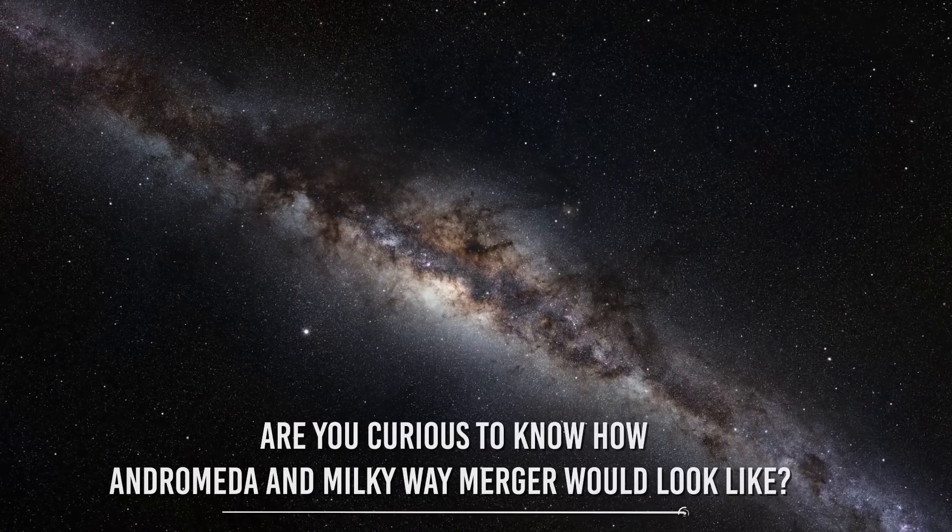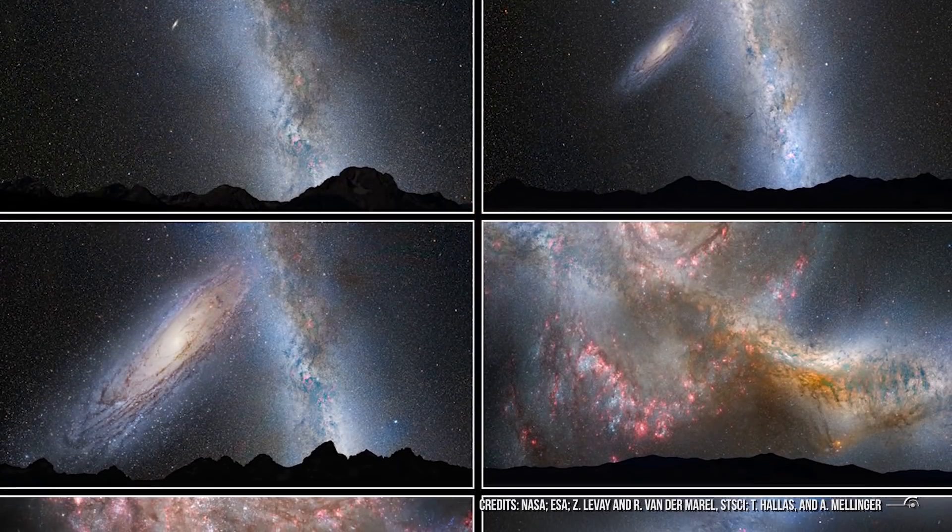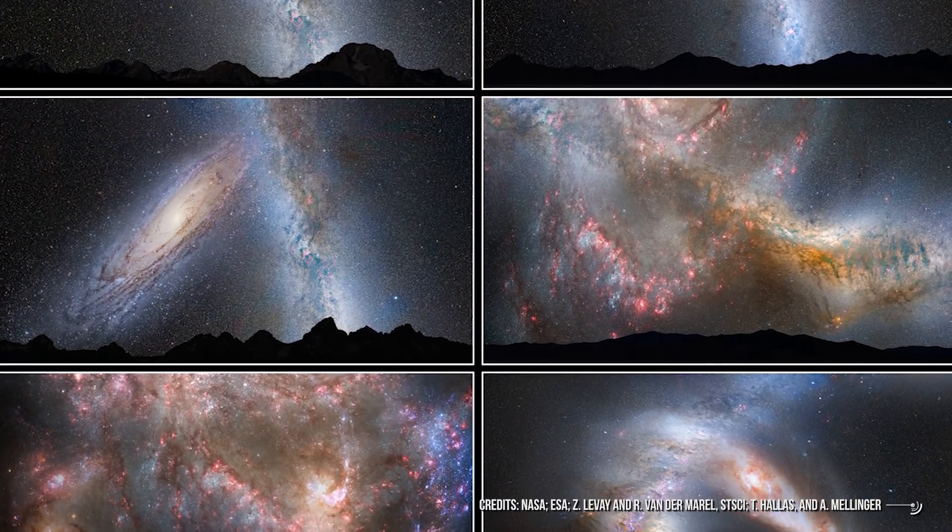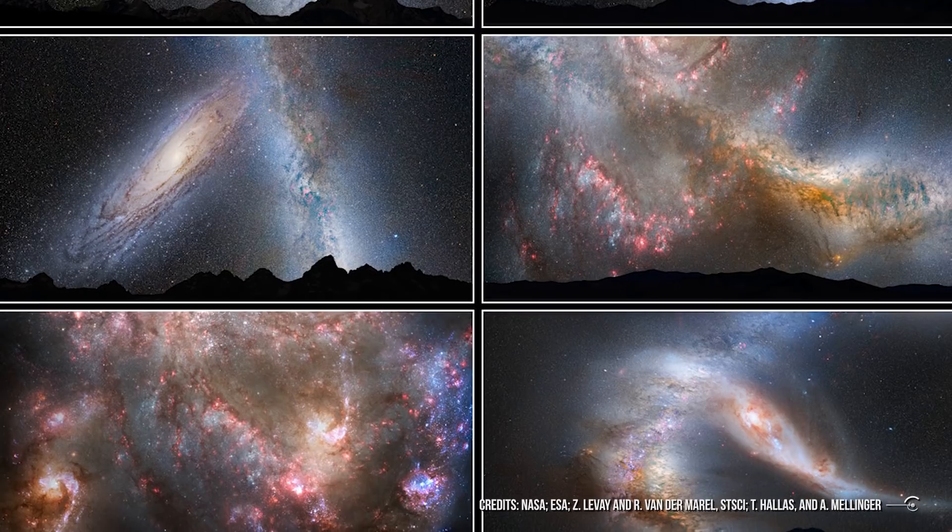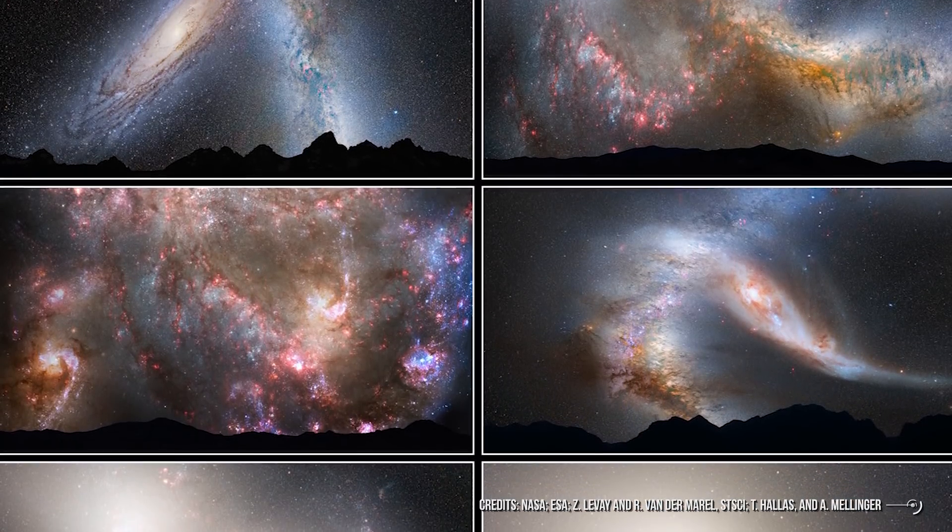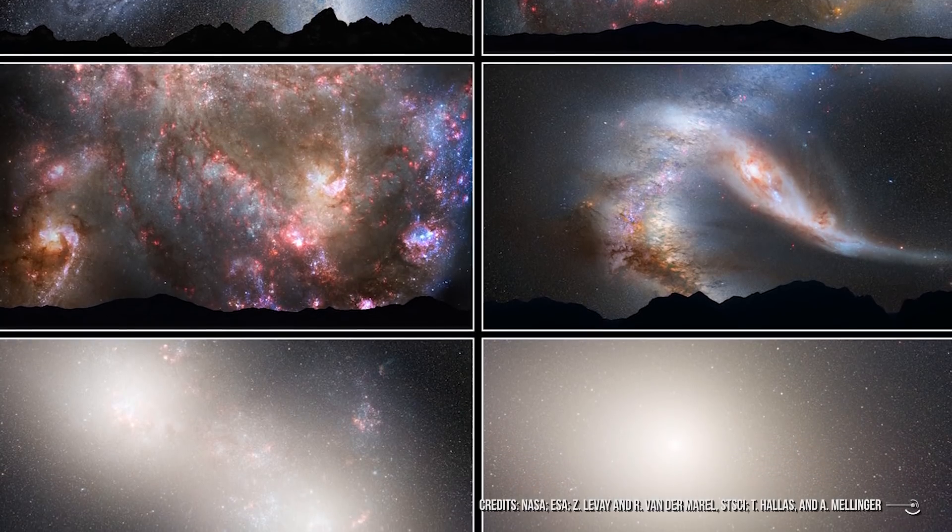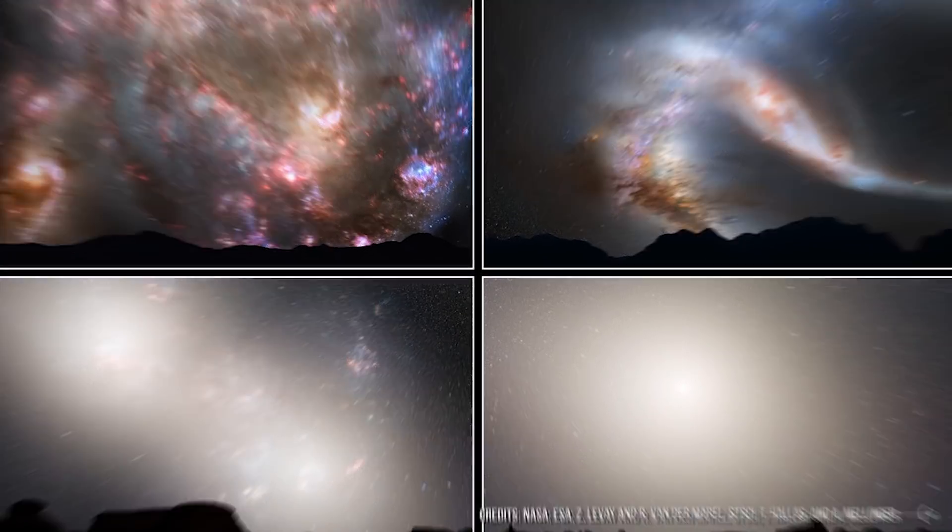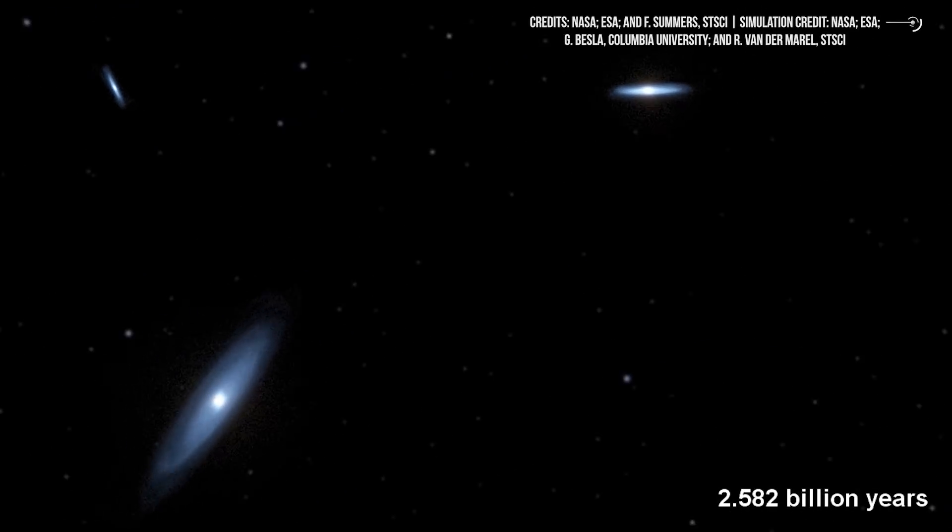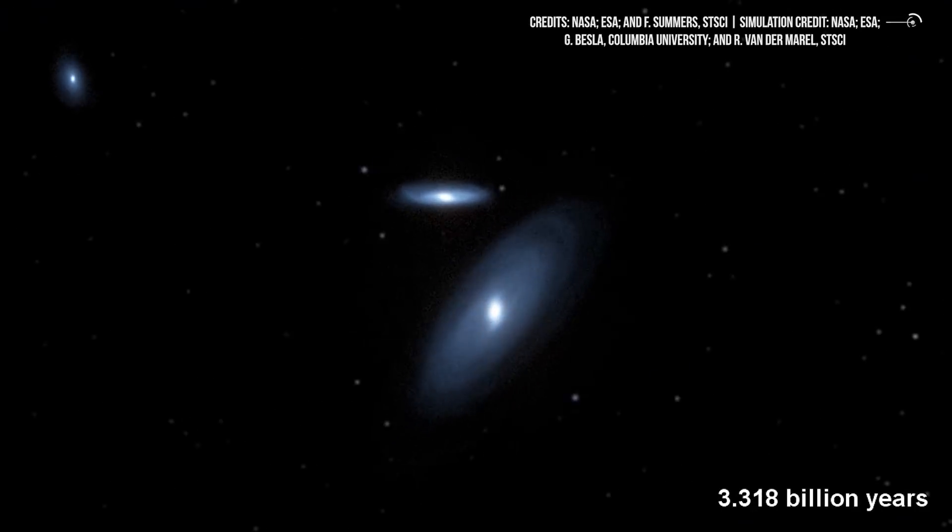Are you curious to know how the Andromeda and Milky Way merger would look? NASA released these images in 2012. They are artistic concepts of what someone on Earth might see as the Andromeda galaxy hurtles towards us. Going from the first row left panel to the fourth row on the right, we see the evolution of the collision from present day to seven billion years. As you can see, in seven billion years, the merged galaxies form a huge elliptical galaxy with its bright core dominating the nighttime sky.